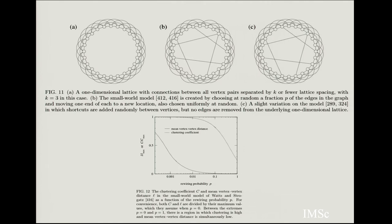Here are more examples: a 1D lattice with connections between all vertex pairs separated by k or fewer spacings (k=3), so nearest, next-nearest, and next-next-nearest neighbors are connected. A small world is generated by removing one of those links and connecting to a distant neighbor randomly. Alternatively, you can add shortcuts on top of existing links without removing them, connecting nodes at arbitrary distance. The clustering coefficient remains high over a large range of rewiring probability p, while the mean vertex-to-vertex distance decreases rapidly even for small p.